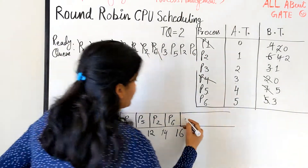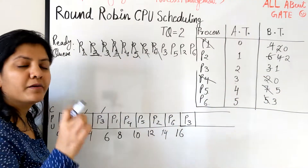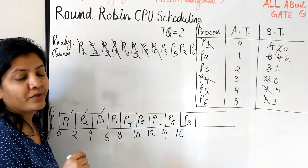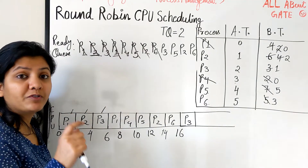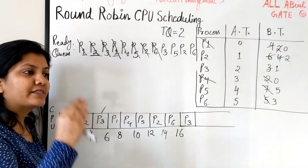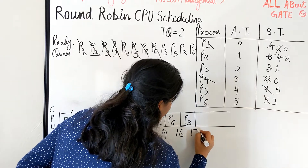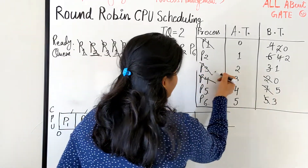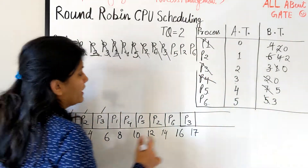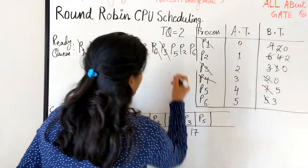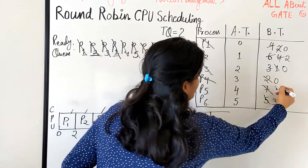Continuing the Gantt chart, next is P3. P3 now needs only one burst unit — which is less than the time quantum — so we give it only the required one. We give just one unit: 16 plus 1 is 17, and P3 is totally finished. It becomes 0 and we don't keep it back in the queue. Next to execute from the ready queue is P5.